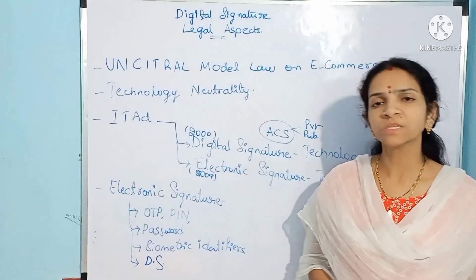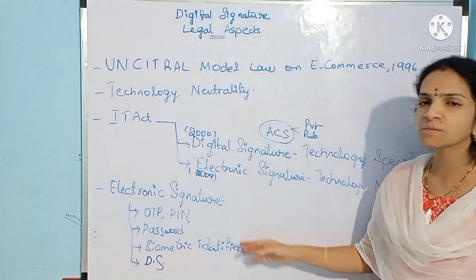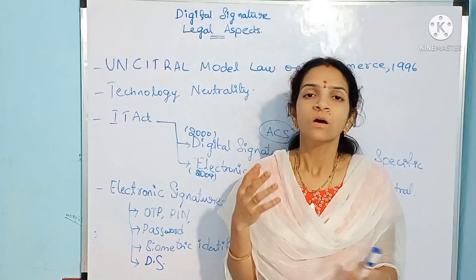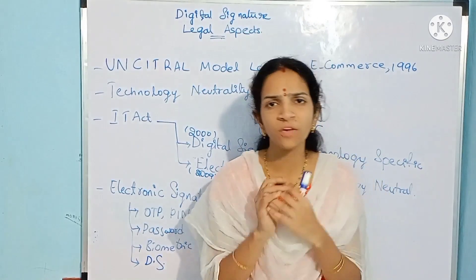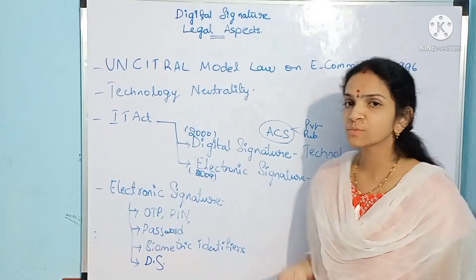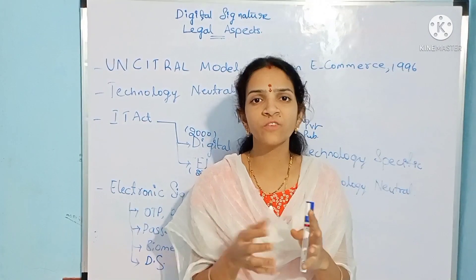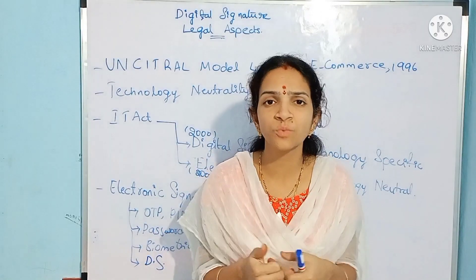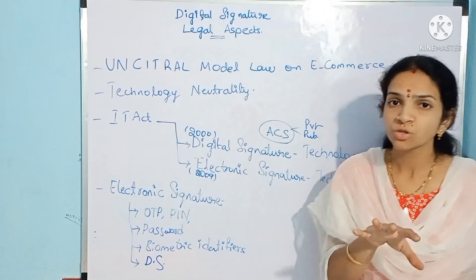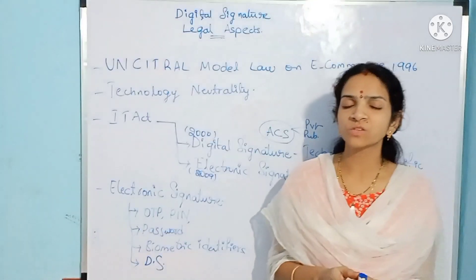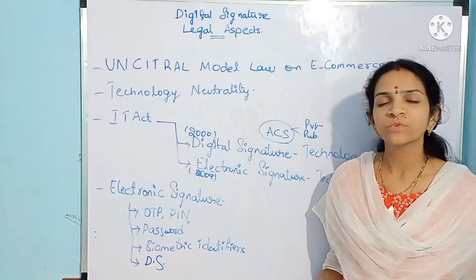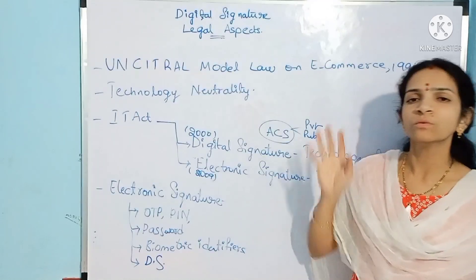Some of the methods included are OTPs — one-time passwords — as well as PINs and passwords used in transactions like opening Gmail, your mobile, or a particular app. Every time you enter a password, you are authenticating that it is you who is performing the action. The next category is biometric identifiers, which include eyeball recognition, face recognition, and fingerprint recognition. Digital signature has also been made a part of electronic signature. So whatever online transaction you perform, using any of these methods constitutes valid authentication according to the IT Act.